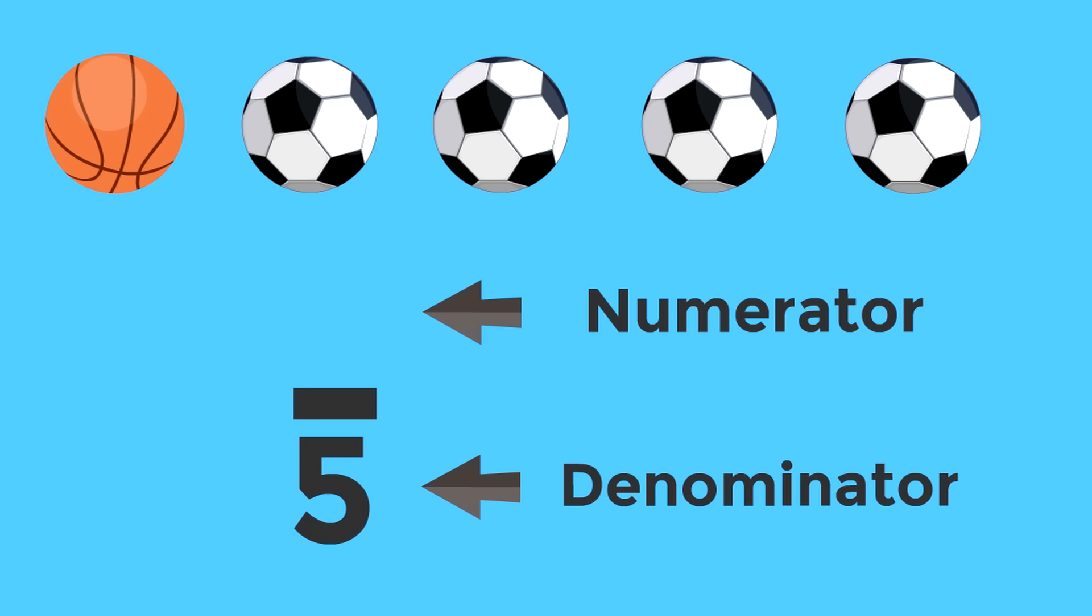Now remember we're asking for the fraction of sports balls that are basketballs. So how many basketballs are there? Yeah. Just one. The number one is the numerator. So one fifth of the sports balls are basketballs. One fifth. Great job.